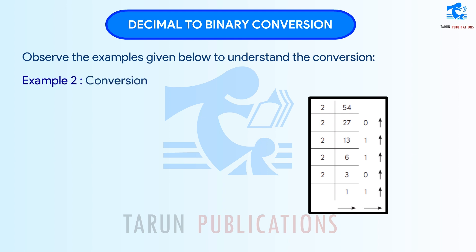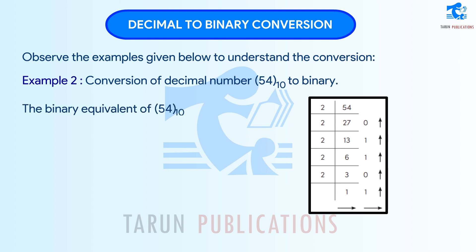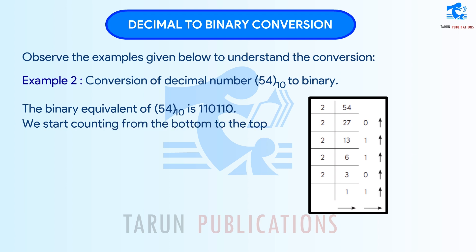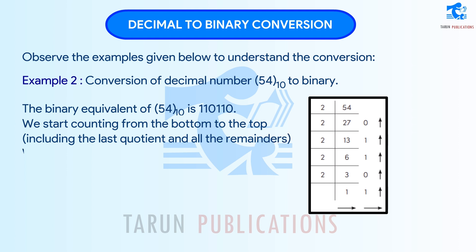We can represent it as 36 base 10 is equal to 100100 base 2. Example 2: Conversion of decimal number 54 base 10 to binary. The binary equivalent of 54 base 10 is 110110. We start counting from the bottom to the top, including the last quotient and all the remainders. We can represent it as 54 base 10 is equal to 110110 base 2.